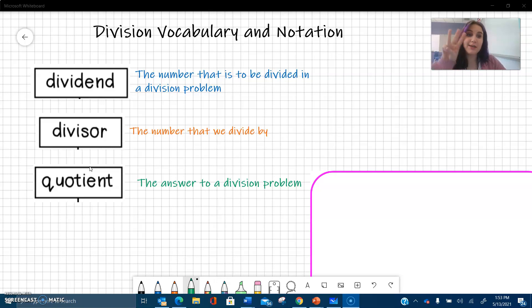There are three parts to a division problem. There's the dividend, the number that is to be divided in a division problem, the divisor, the number that we divide by, and the quotient, the answer to a division problem, so the result.